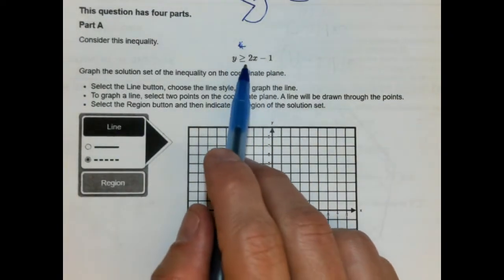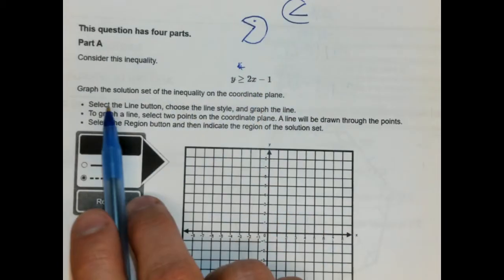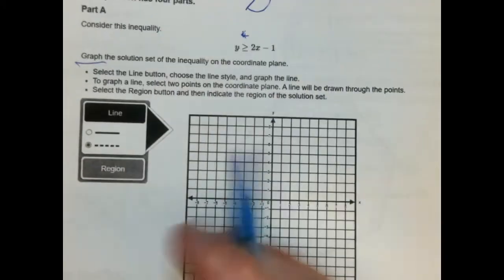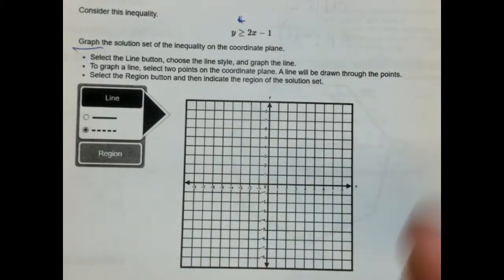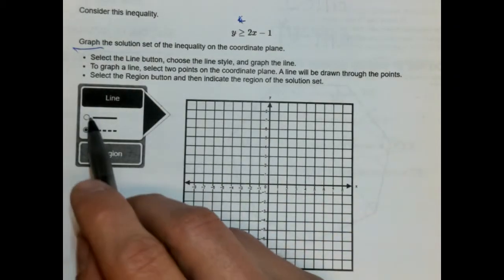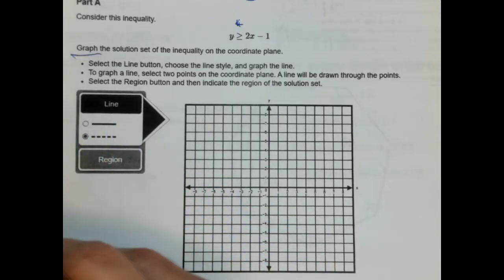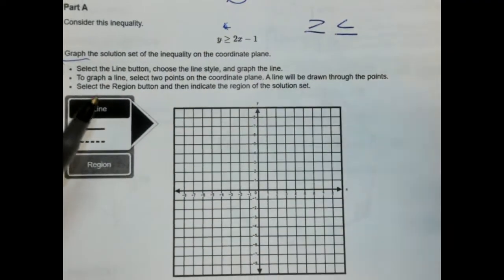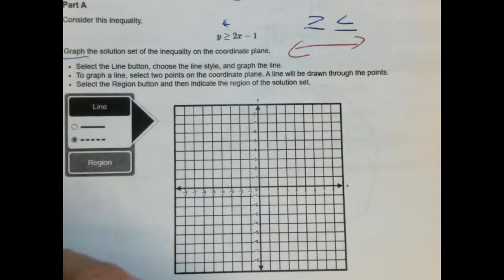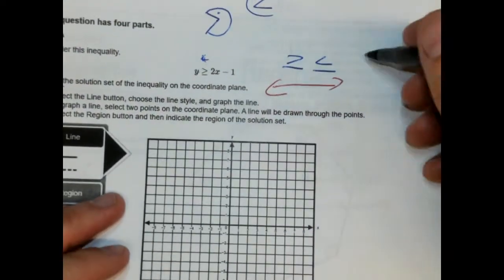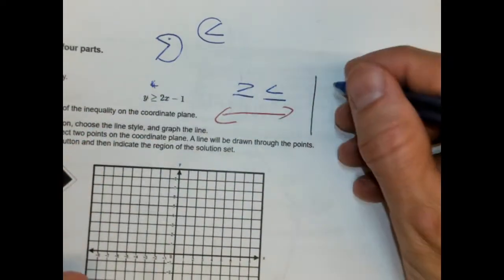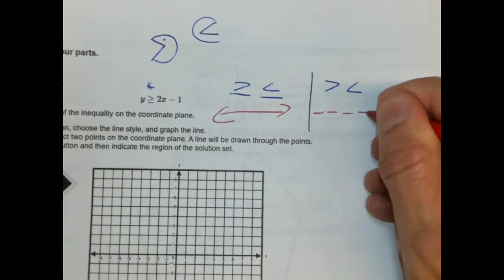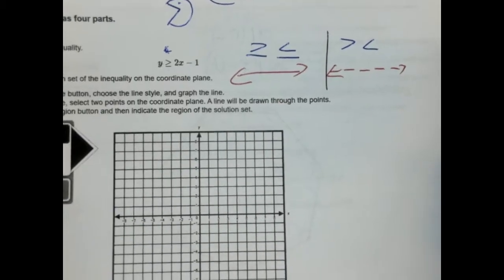So consider this inequality: y is greater than or equal to 2x minus 1. Graph the solution set of the inequality on the coordinate plane. There are two choices of lines — a solid line and a dotted line. When it's 'or equal to' — so greater than or equal to, or less than or equal to — we're going to use a solid line, because that means it's inclusive: the line itself is part of the solution. If it was just greater than or less than with no 'or equal to,' then we use a dotted line because that's non-inclusive.